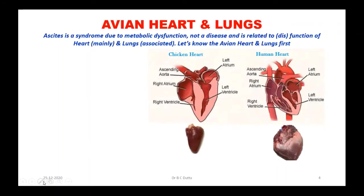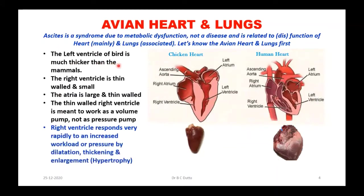This is the chicken or avian heart, and this is the human heart — they are quite different. The left ventricle of birds is much thicker than in mammals. The right ventricle is thin-walled and small in the case of birds. The atria are large and thin-walled — larger than in mammals but very thin-walled. The thin-walled right ventricle is meant to work as a volume pump, not a pressure pump.